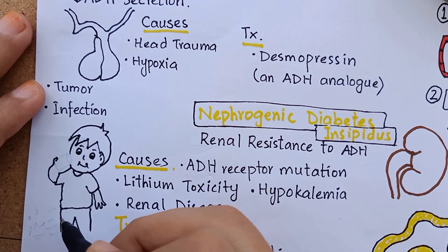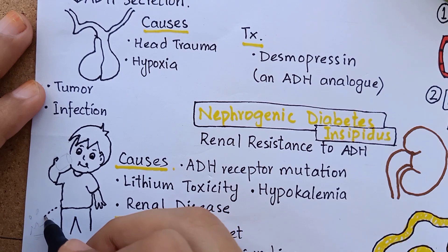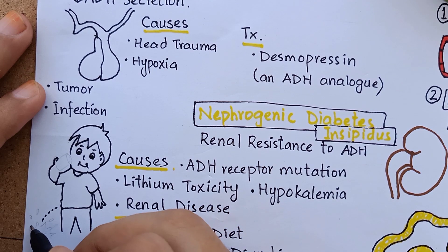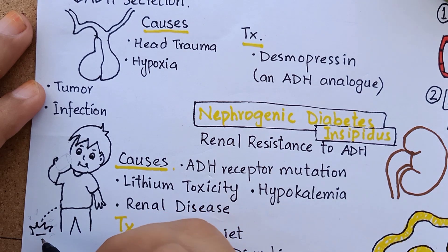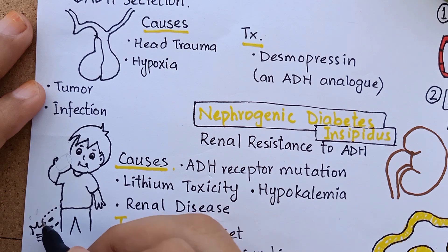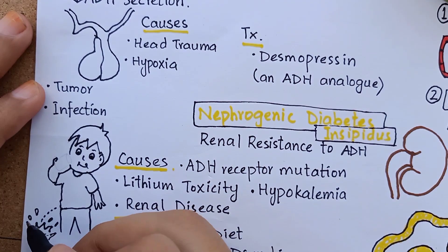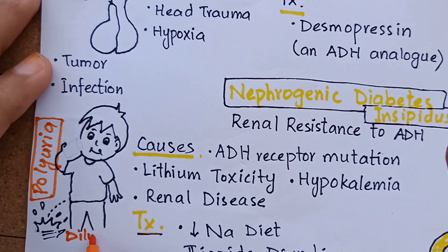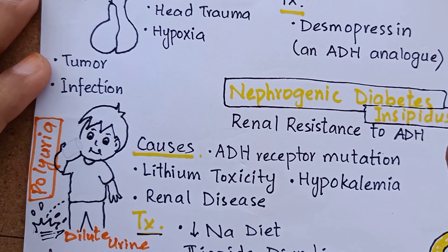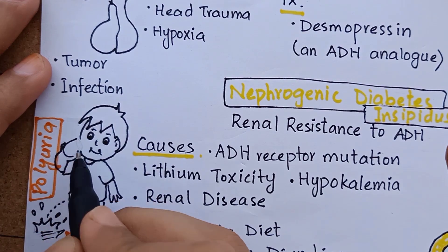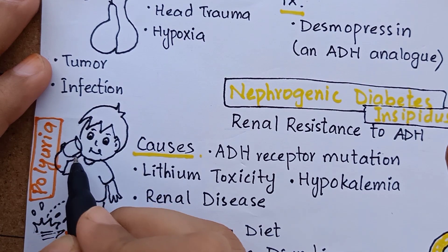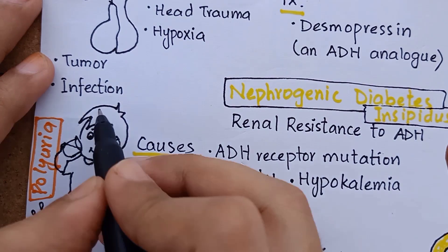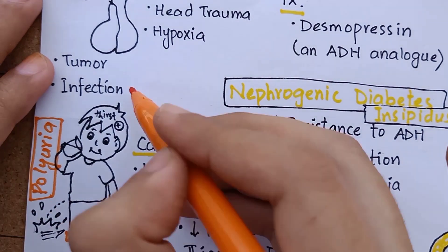From this whole discussion, the characteristic symptoms of diabetes insipidus are polyuria — that is, excessive dilute urination — and polydipsia, that is, excessive thirst.